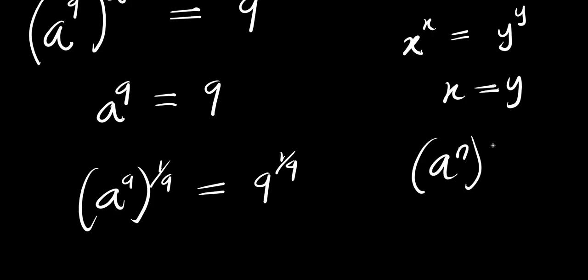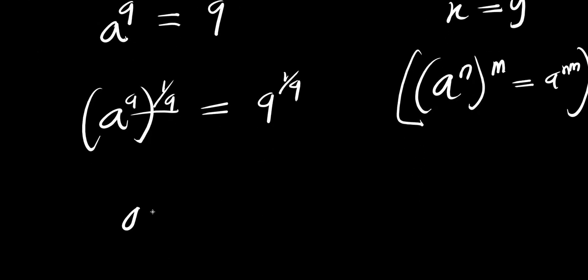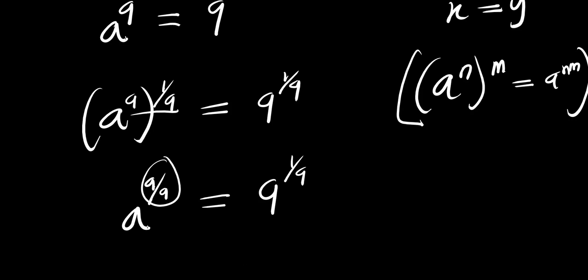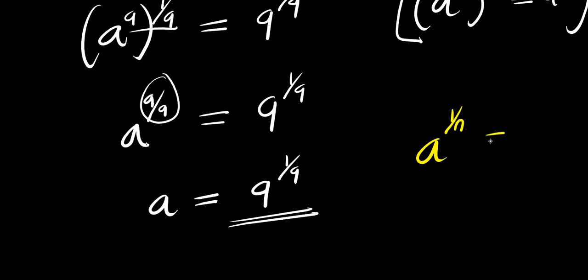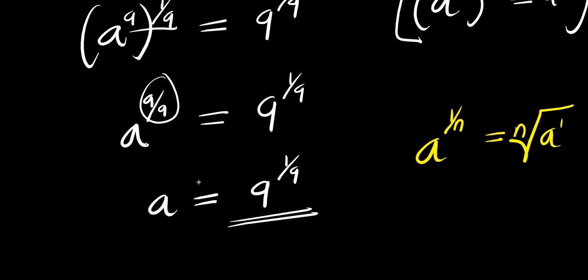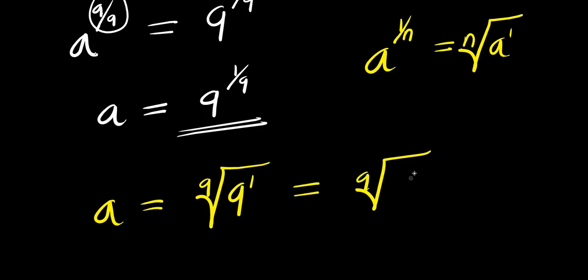Remember, a^n raised to the power of m equals a^(n×m). Multiplying the exponents gives a^(9/9) = 9^(1/9), and since 9 divided by 9 is 1, we have a = 9^(1/9). Since a^(1/n) equals the nth root of a, we can say a equals the 9th root of 9.